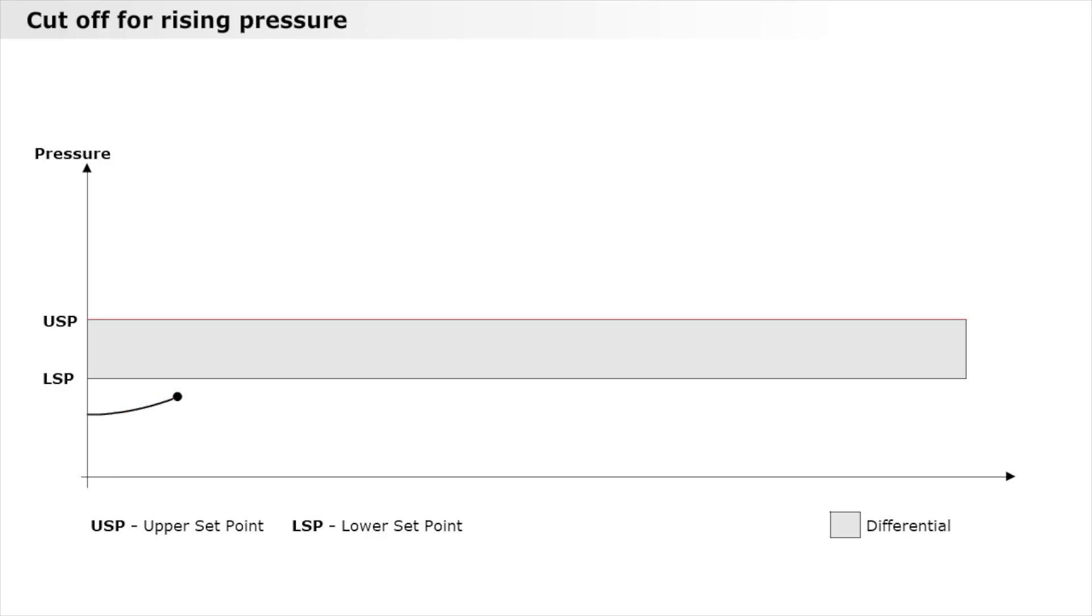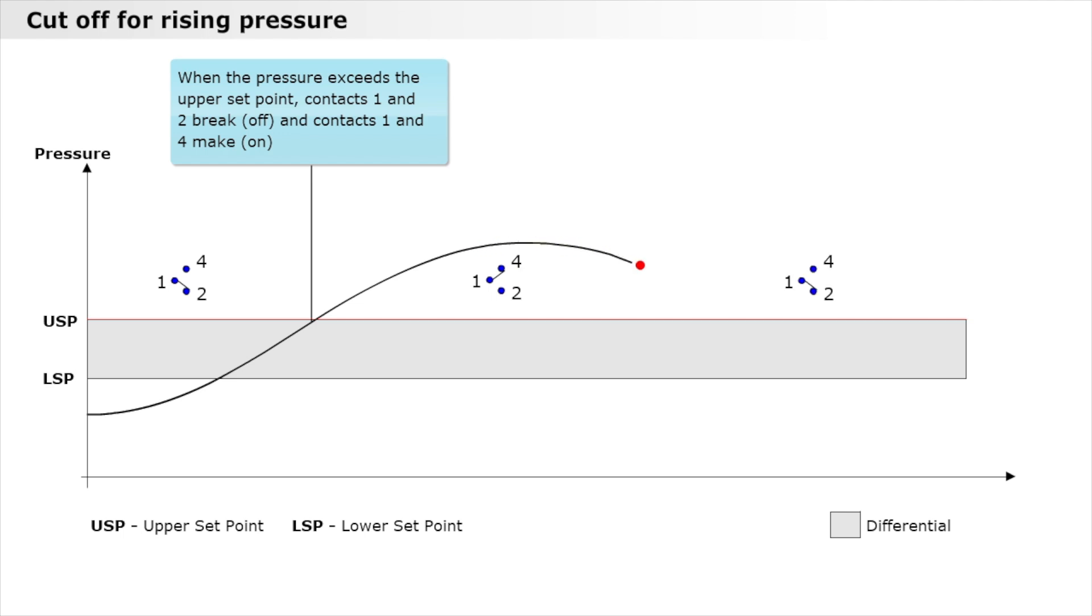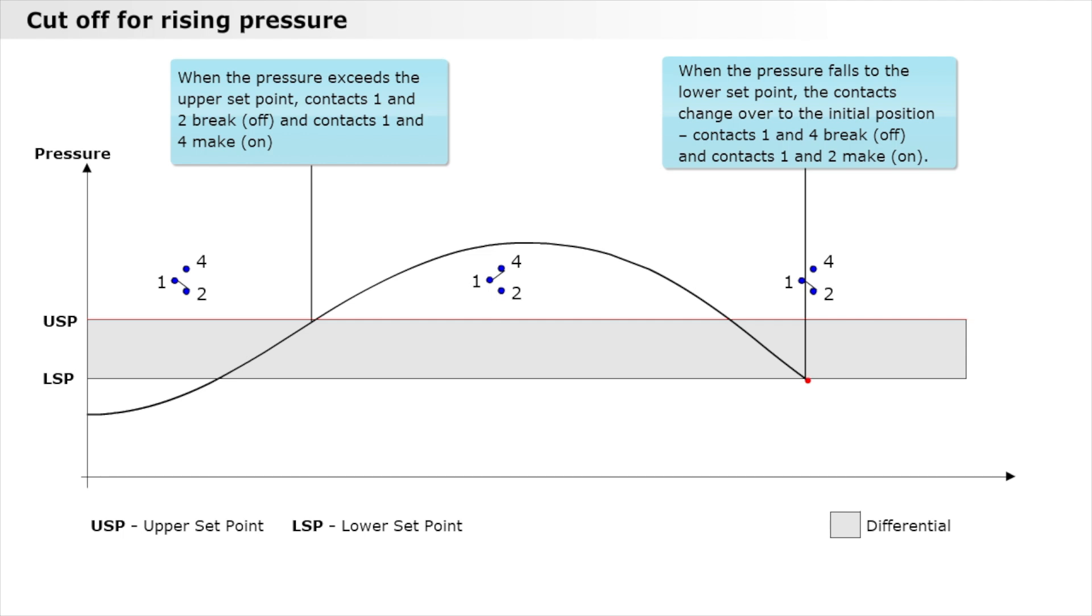When the pressure exceeds the upper set point, contacts 1 and 2 break and contacts 1 and 4 connect. When the pressure falls to the lower set point, the contacts change over to the initial position. Contacts 1 and 4 break and contacts 1 and 2 connect.